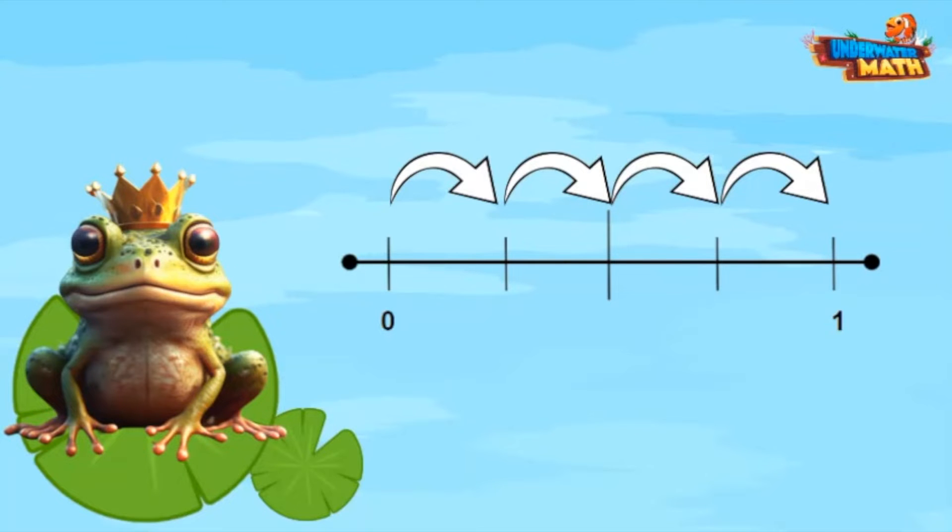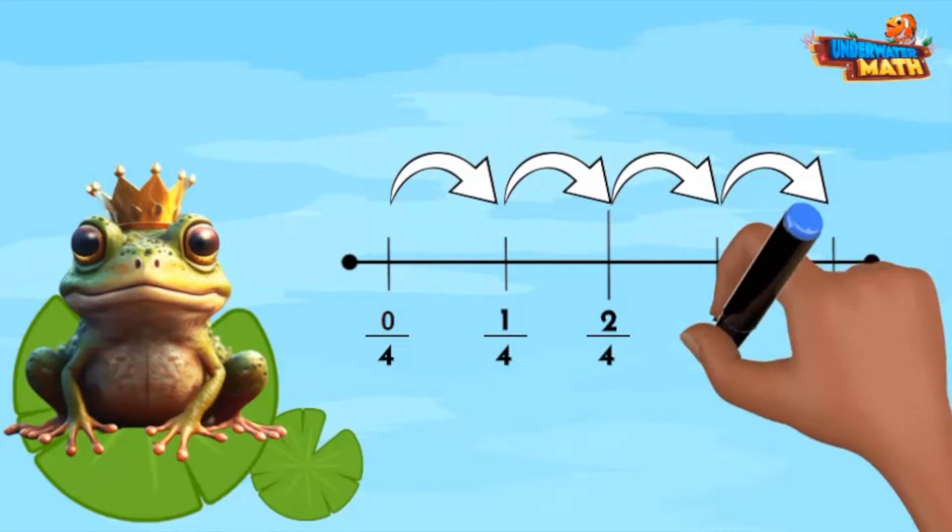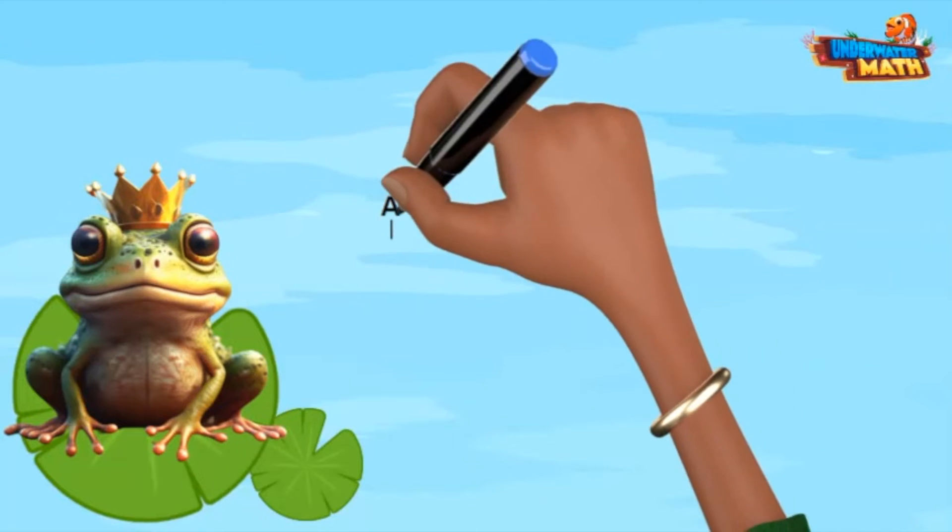This hash mark represents zero fourths, one fourth, two fourths, three fourths, and four fourths or one whole. Hop to it.